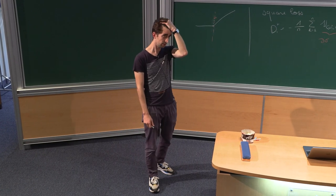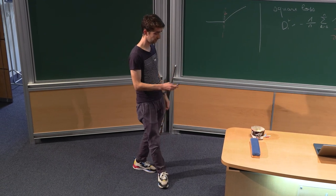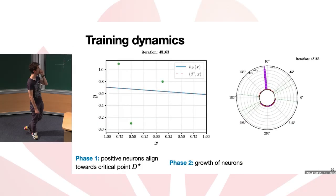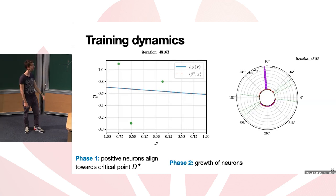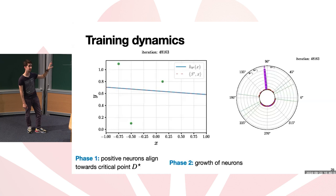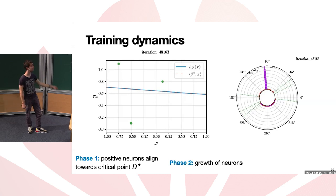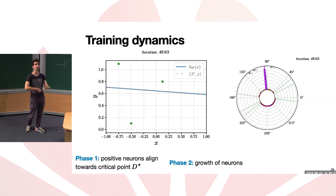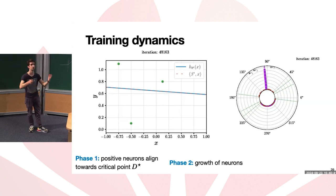Question: Do these results extend to other optimizers like Adam? Answer: The theoretical results are for gradient flow; experiments use full-batch gradient descent. It should hold for SGD. For Adam, it's likely very different because the gradient renormalization allows you to escape saddle points very quickly — you don't have the slow phase of turning around the saddle point, so the early alignment phenomenon would presumably not occur in the same way.